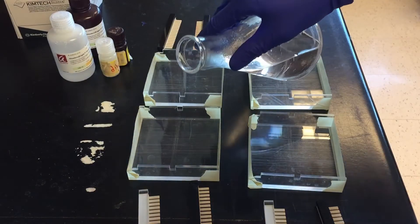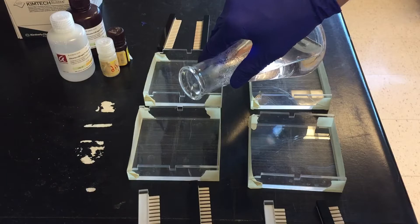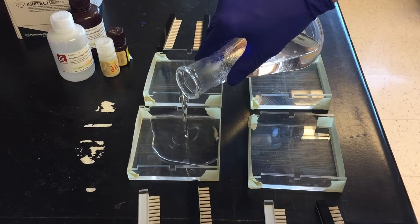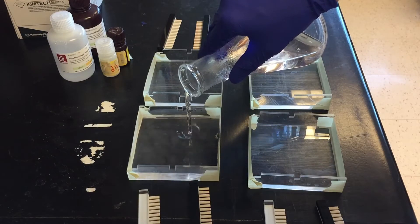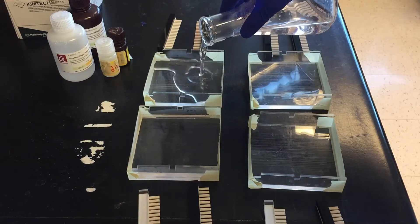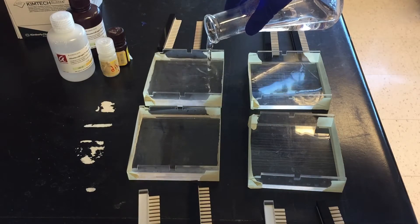Pour the gel after it's cooled enough to touch the side of the flask for a few seconds. You can put the comb in before or after, it's just more important you make sure it's clean. And then let it solidify for about 30 to 45 minutes.